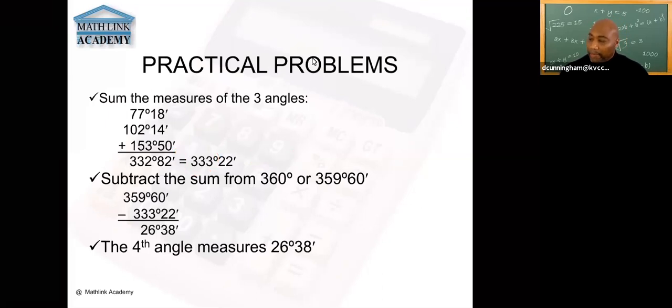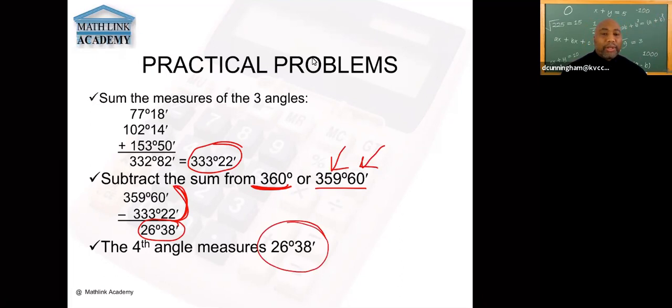Next step, we're going to subtract 360, but notice we don't have any minutes, so we're going to have to take away one degree. So that'll be 359, and that gives me 60 seconds. This is what the actual subtraction we're going to do because you always want your top number for each unit to be greater. And then once we do that we end up with 26 degrees 38 minutes, and that's our answer. That's how we would do this particular practice problem.